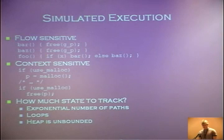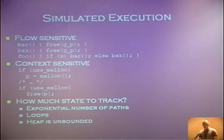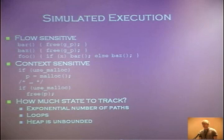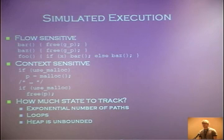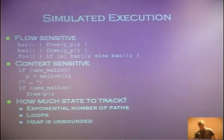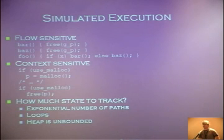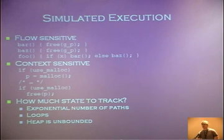The big challenge is how much state do you track. Any function with if/else has an exponential number of paths — ten ifs means a thousand paths. Loops can be potentially unbounded; a tool might go through a loop over and over. If you have an if or switch inside the loop, it's very easy for a tool to attempt to run forever, executing every possible combination of state. The heap is also unbounded — in C or C++, there are pointers running around everywhere. If you're attempting to track it accurately, you need a lot more memory and it's going to take forever. You'd be better off with fuzz testing, because simulating execution to that level of detail is very slow.